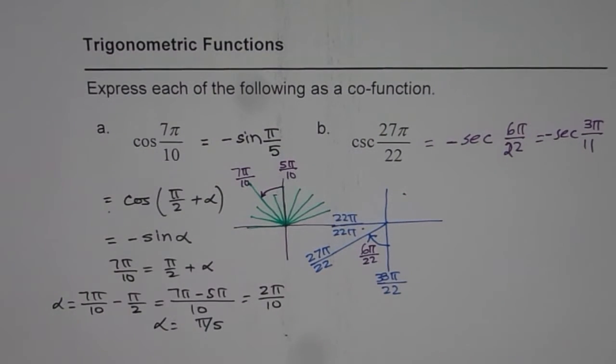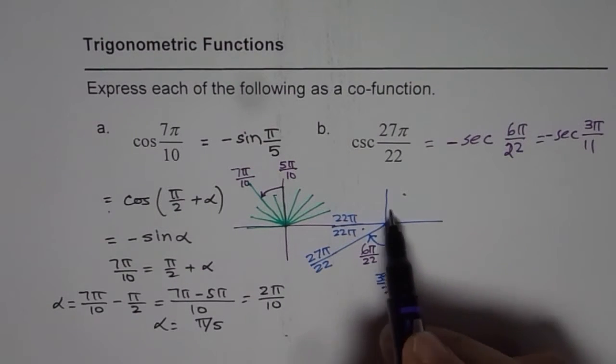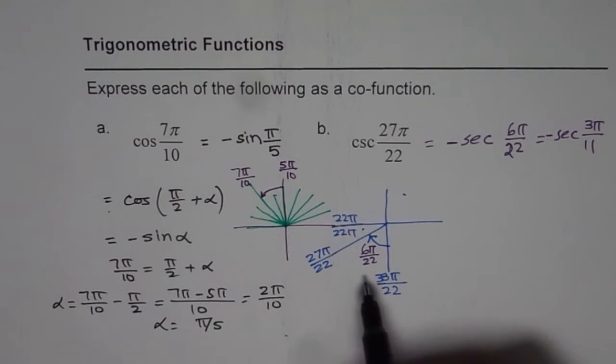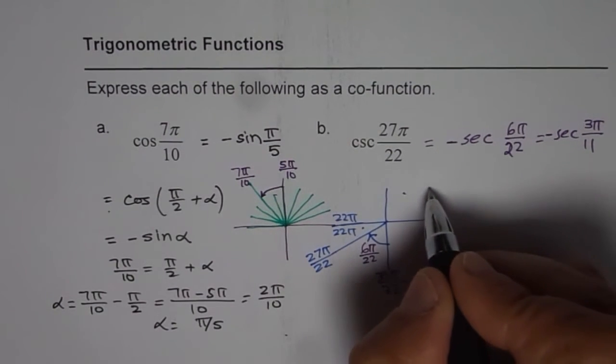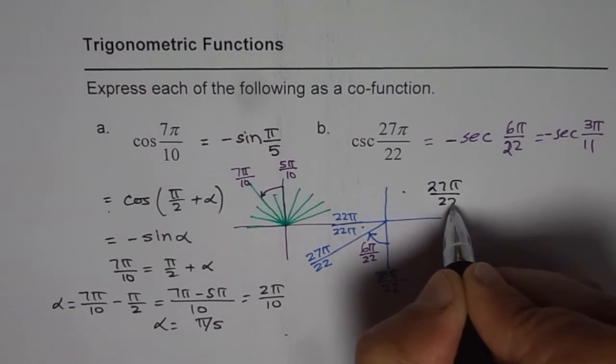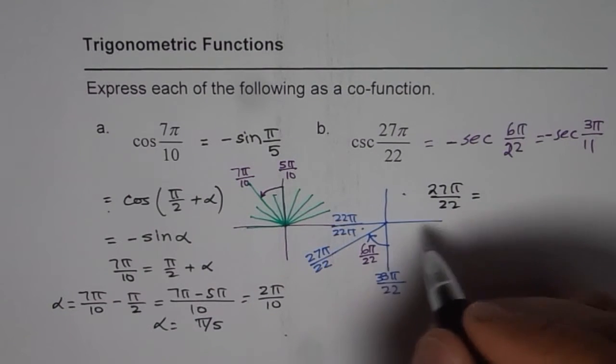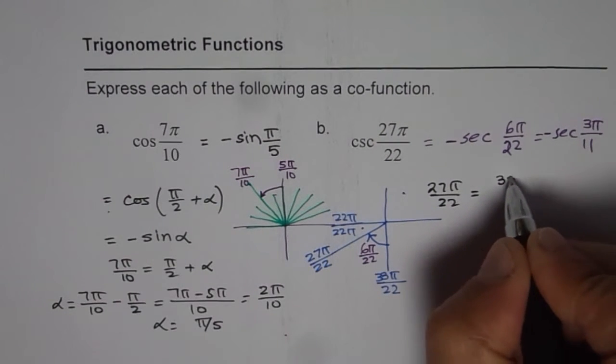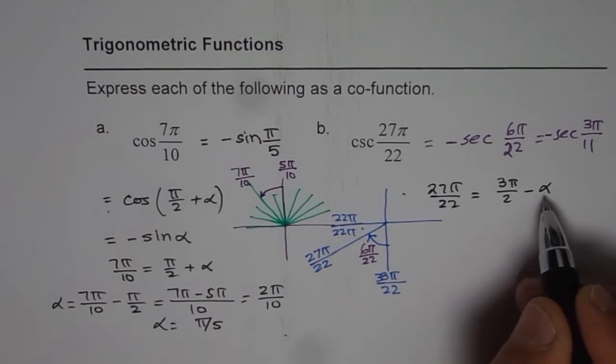So that is how we can actually get our answer very easily from the understanding of the system itself. The other way, of course, is to do it algebraically, which is we can write 27π/22 as equal to 3π/2 minus α. We need to find what that angle is.